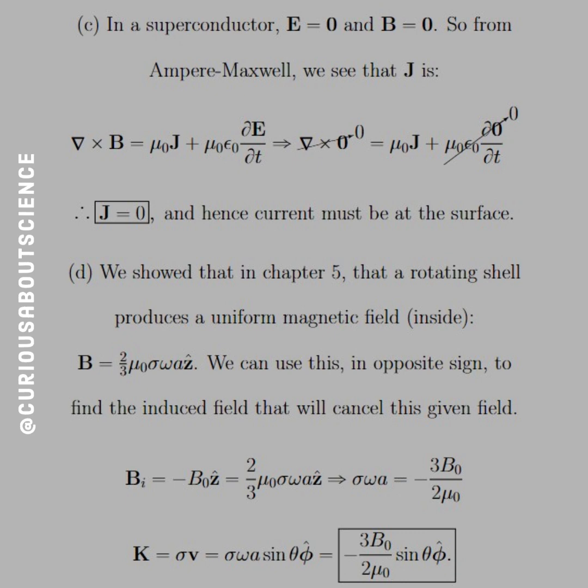And then we can use this in opposite sign to find the induced field that will cancel the given field. So basically, we know that's the field when we have a charge there, and now we need to find the induced field, hence the negative. So we go ahead and do that. B induced equals negative B naught z hat, which is equal to this given equation.